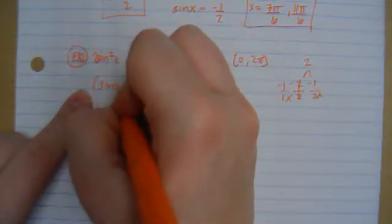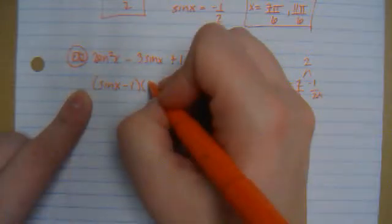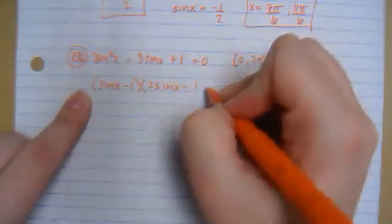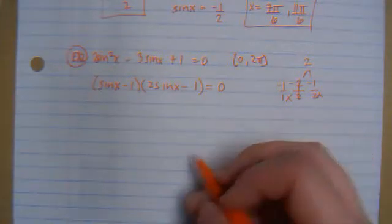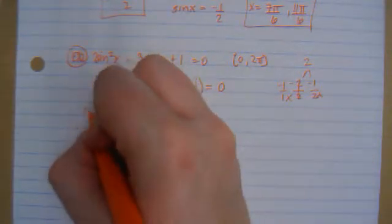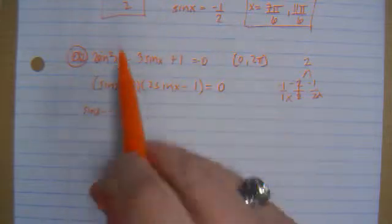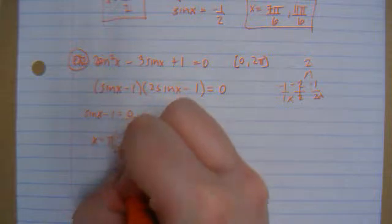So this would be sine x minus 1, and this would be 2 sine x minus 1 equals 0. So set both equal to 0. So sine x minus 1 equals 0. That's the same as what we did in example 1 up here. So I know that this one is x equals pi over 2.